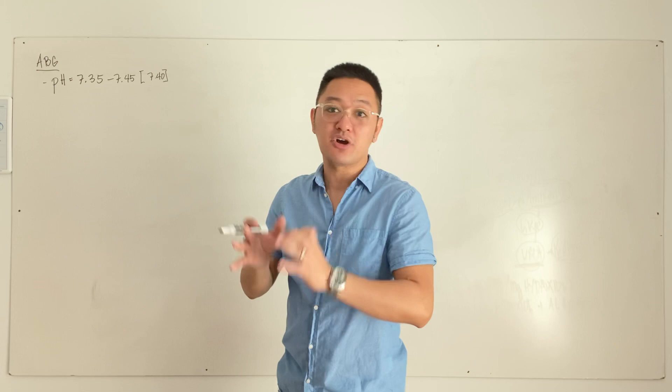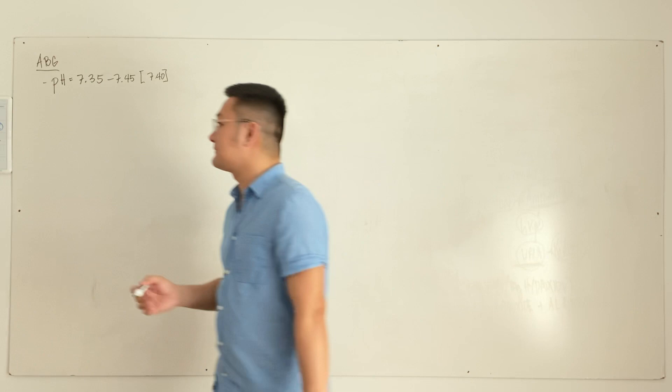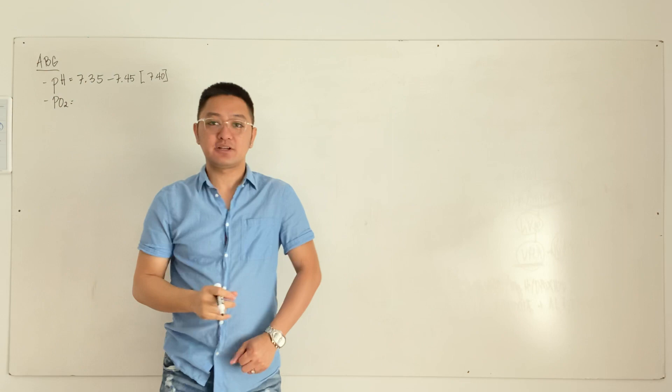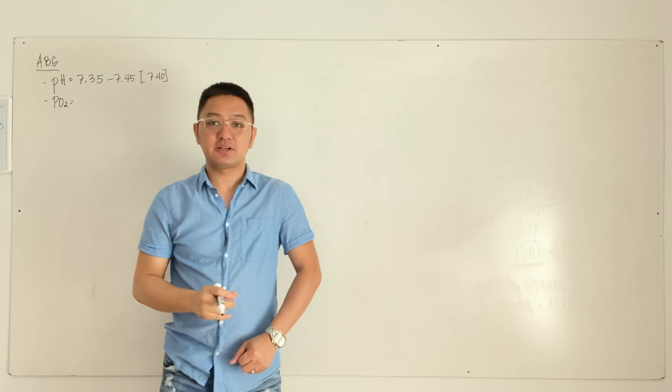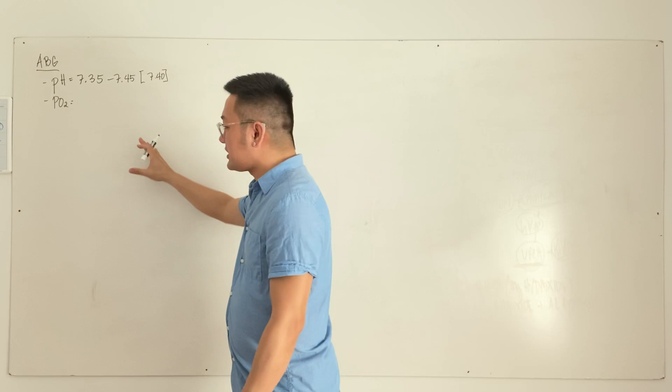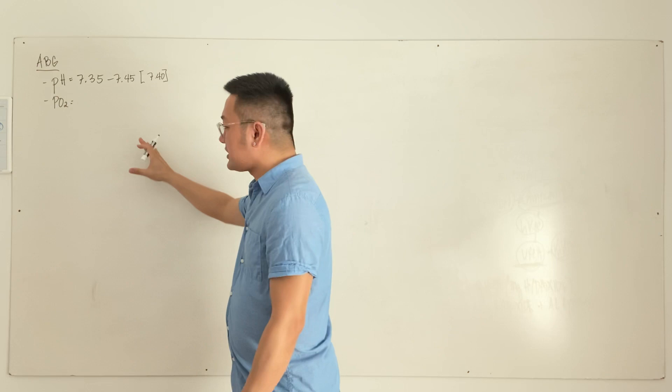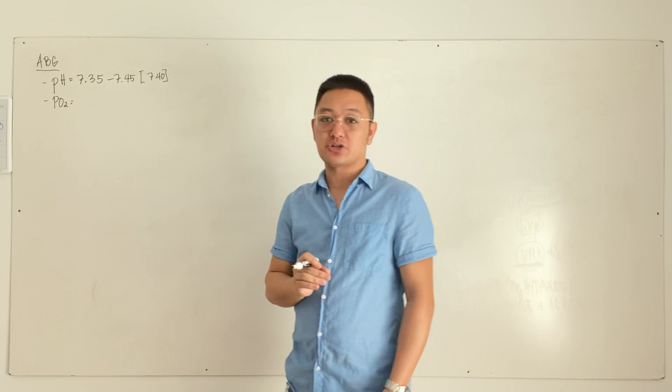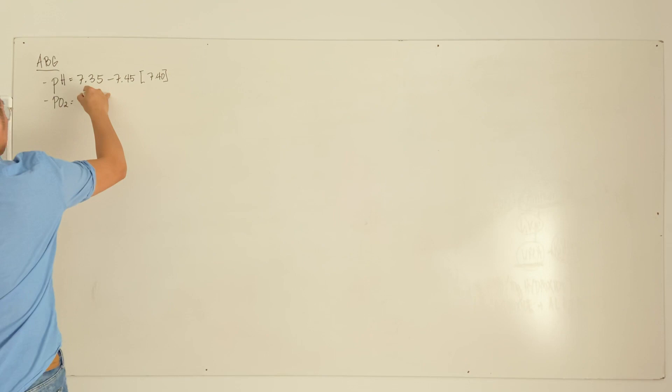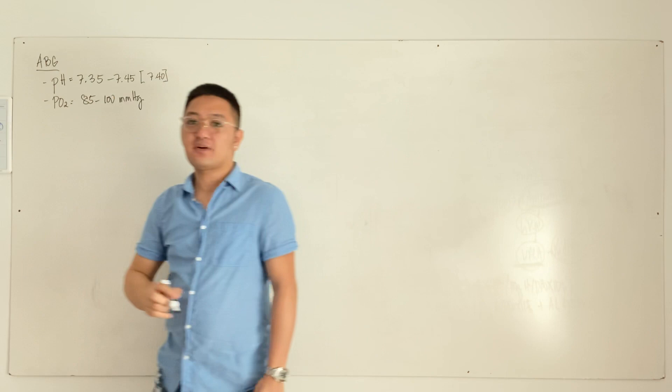Next is partial oxygen pressure (PO2). Do not confuse this with O2 saturation. O2 saturation is measured with a pulse oximeter and expressed as a percentage. In ABG, we use partial oxygen pressure, expressed in millimeters of mercury (mmHg). The normal partial oxygen pressure ranges from 85 to 100 mmHg.